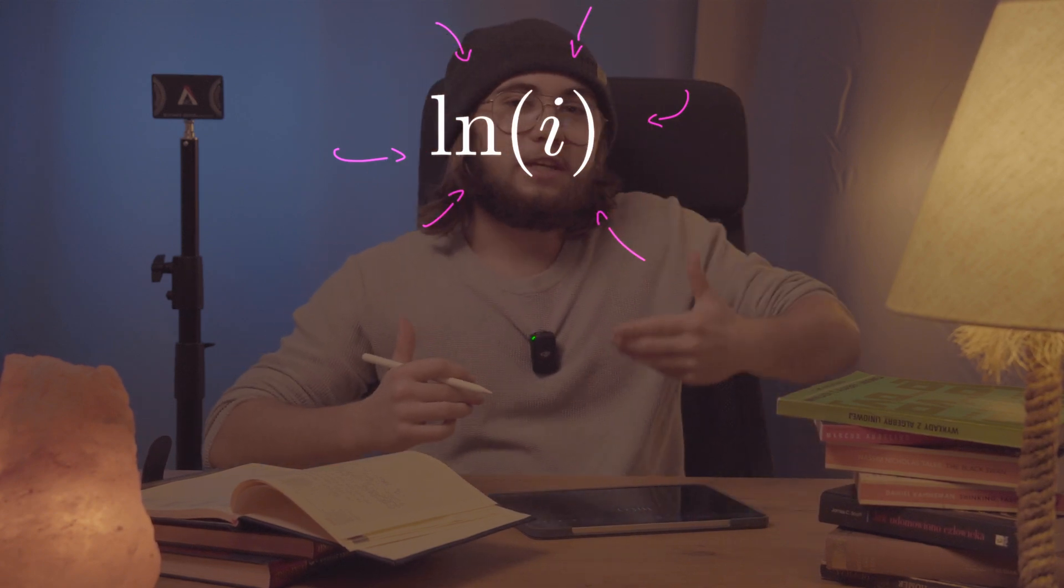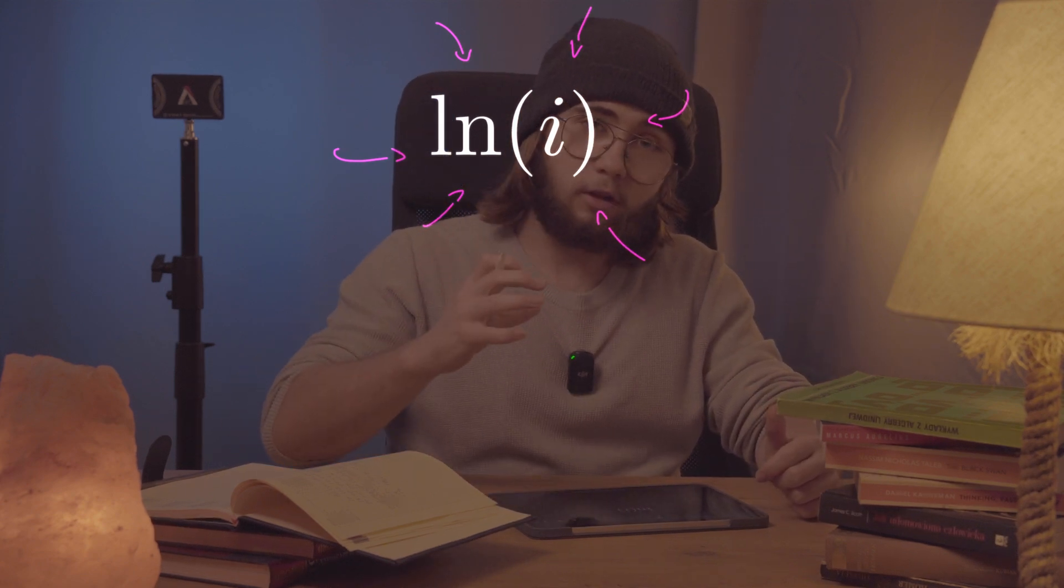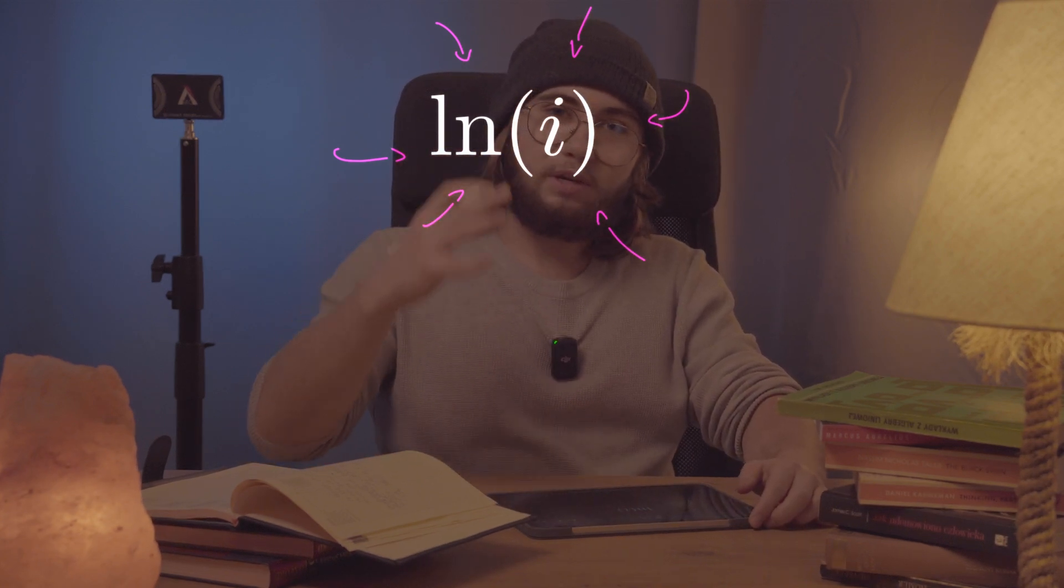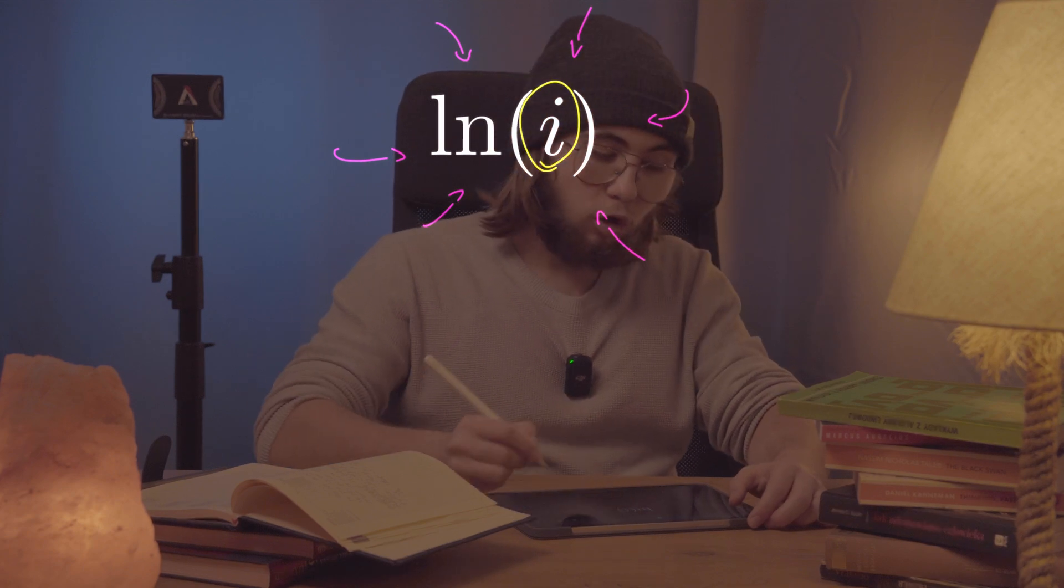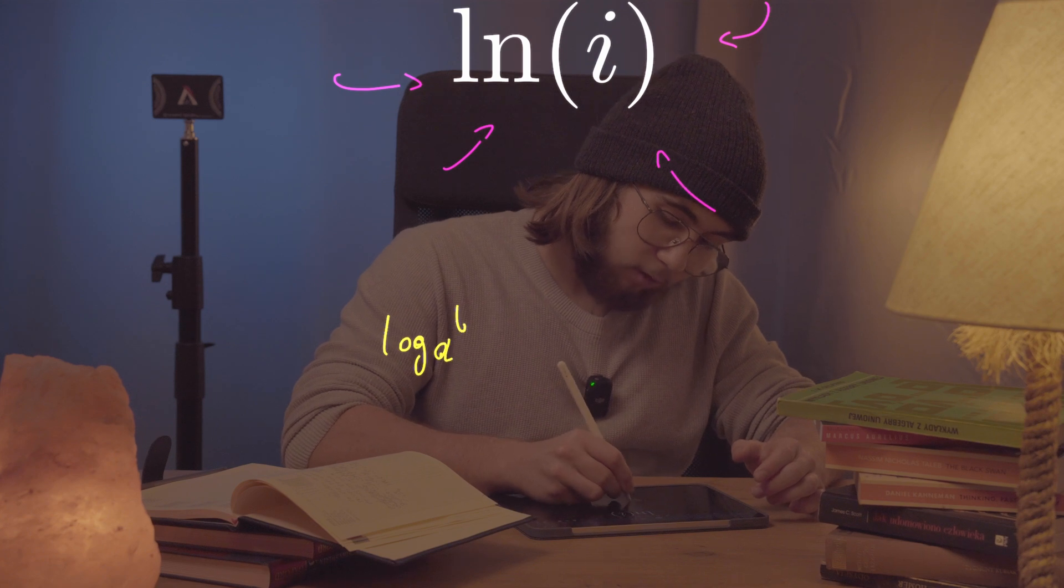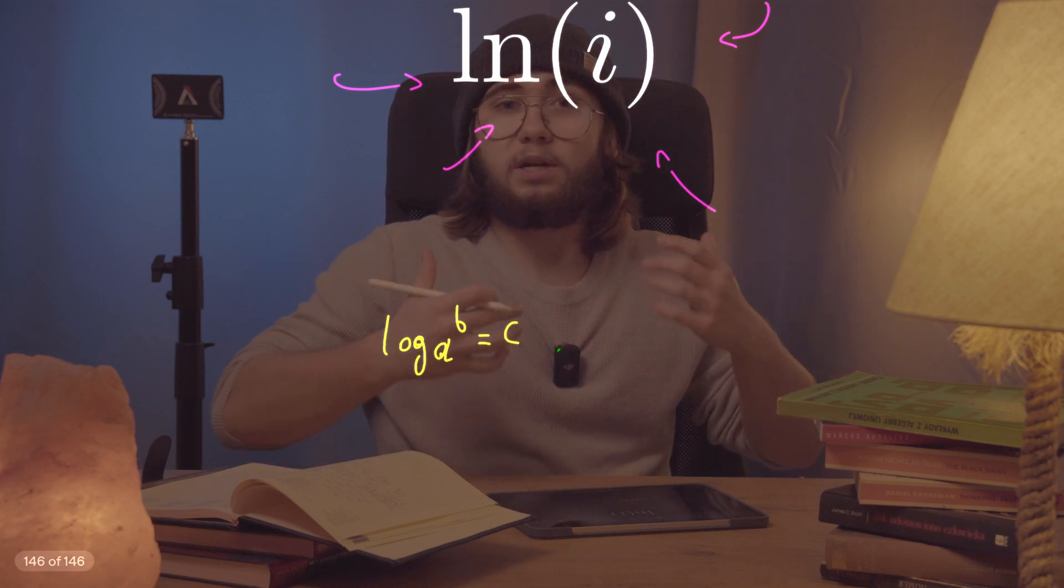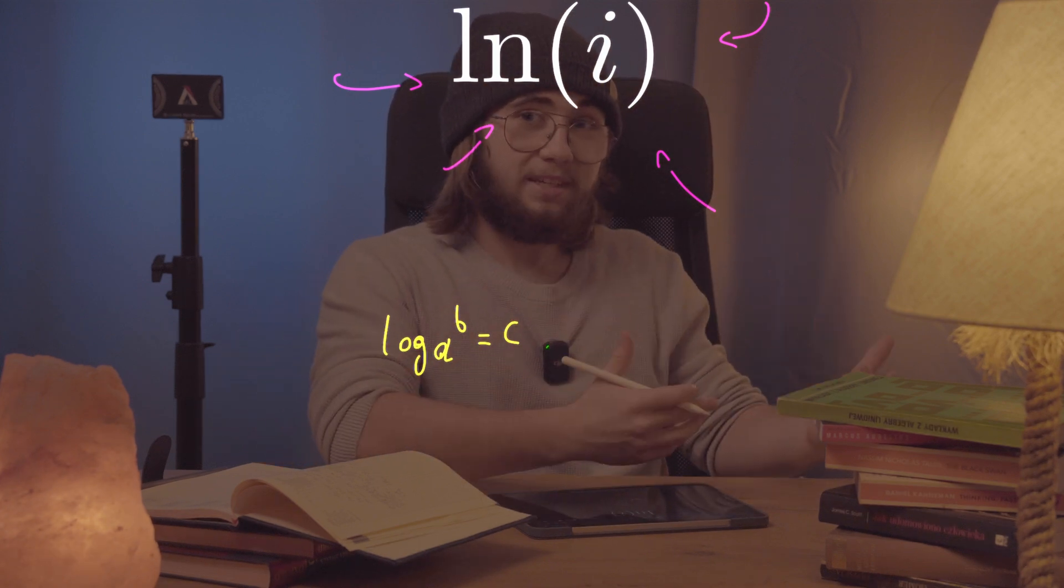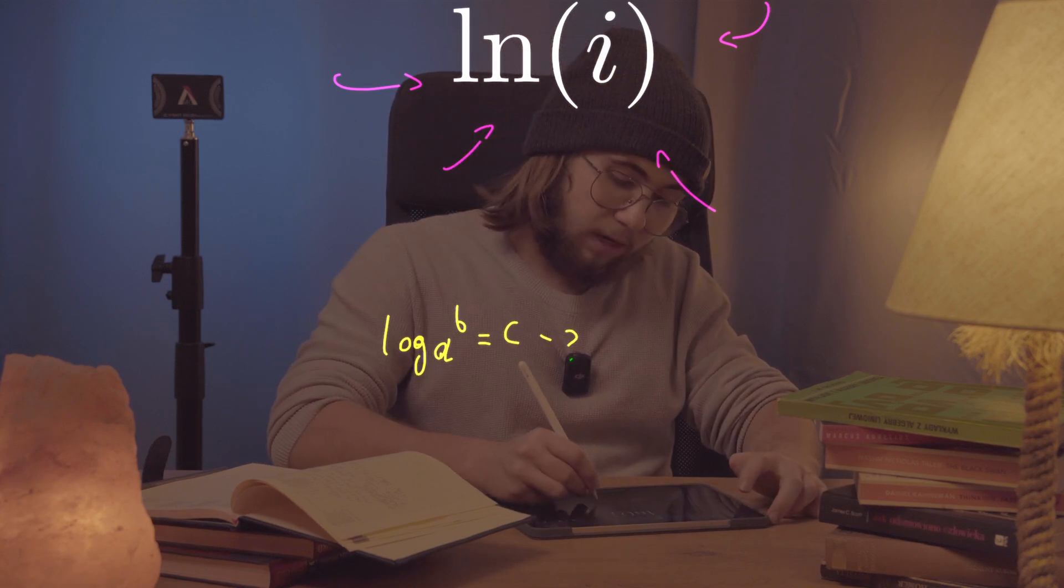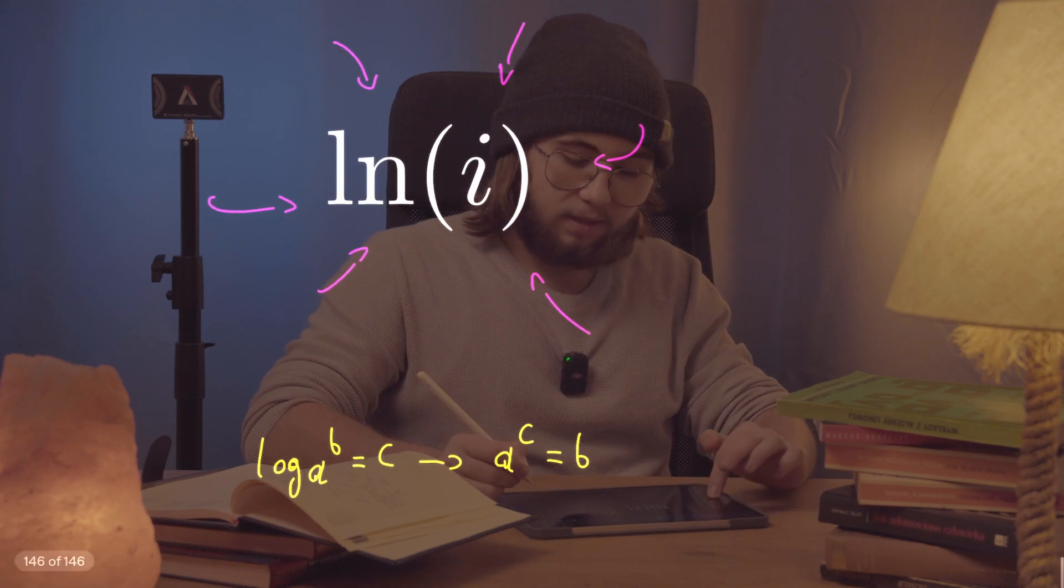Any kind of a log is basically just a question. To what power do we have to raise the base of the log, in this case the base is e, in order to get the number that we're taking the logarithm of? So if I'm taking, let's say, the log base a of b and its result is c, then I'm asking to what power do I have to raise a in order to get b, and the result is c. So it means that when I raise a to the power of c, I'm gonna get b.